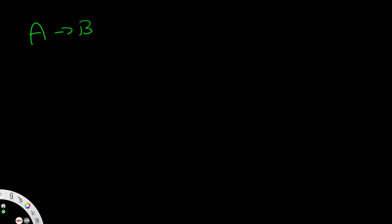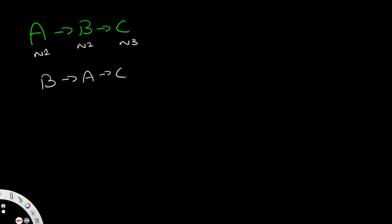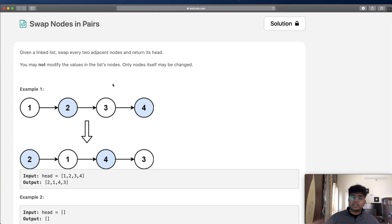What does that actually mean? Let's look at an example. Say we have A points to B points to C — node 1, node 2, node 3. We want to swap A and B, so our output will be B points to A points to C. A simple solution would be to just swap the values of A and B, but you cannot do that in this question. Instead, you change what a node is pointing to — so rather than A pointing to B, you have B pointing to A.